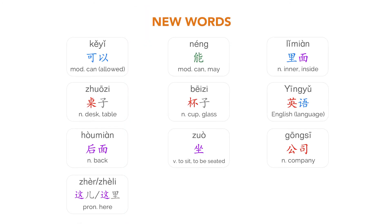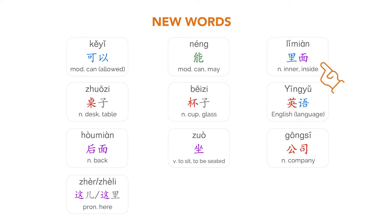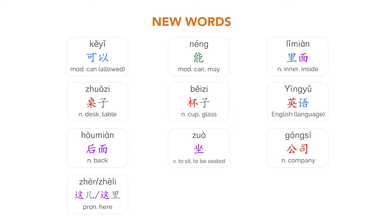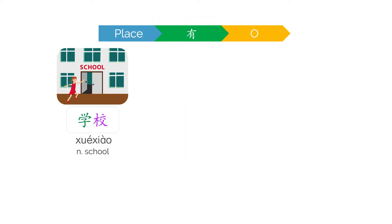First, let's take a look at the new words we will learn in this lesson. 能, 里面, 桌子, 杯子, 英语, 后面, 座, 公司, 这儿, 这里, 学校。